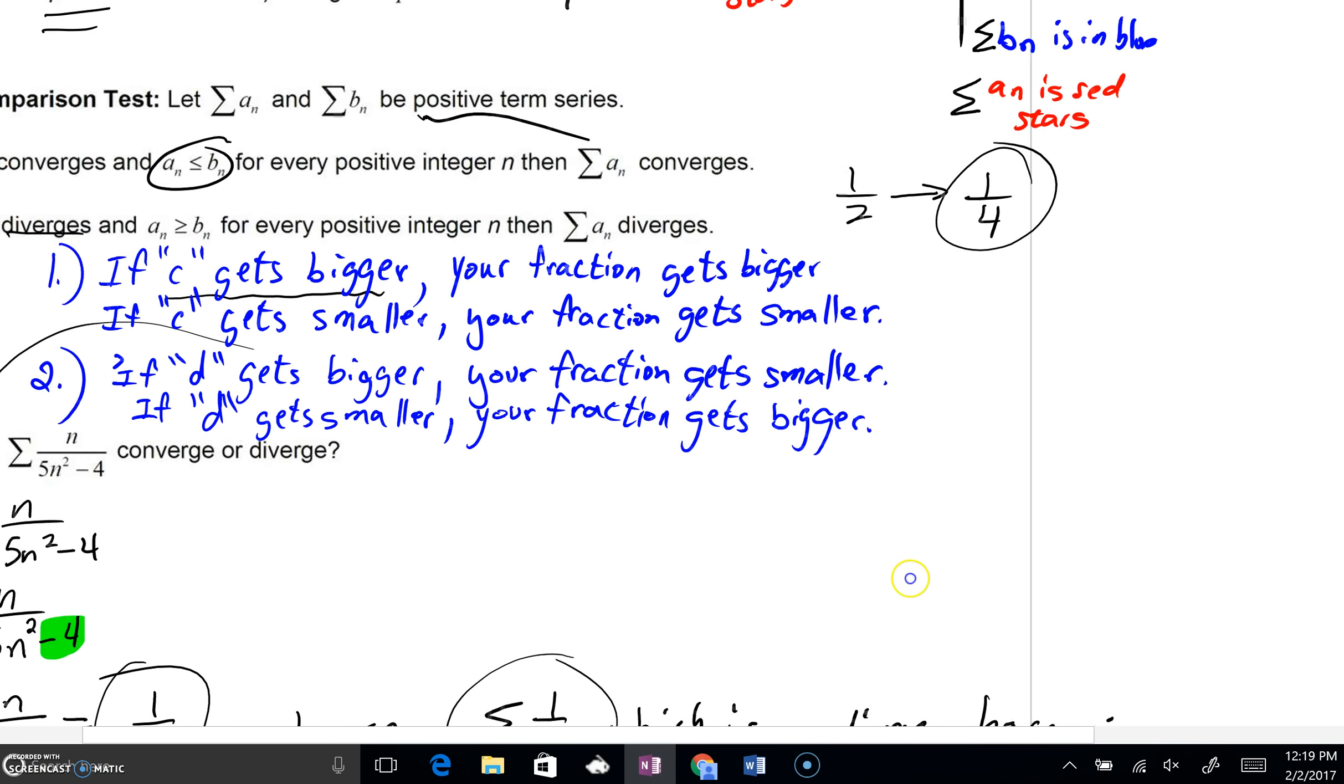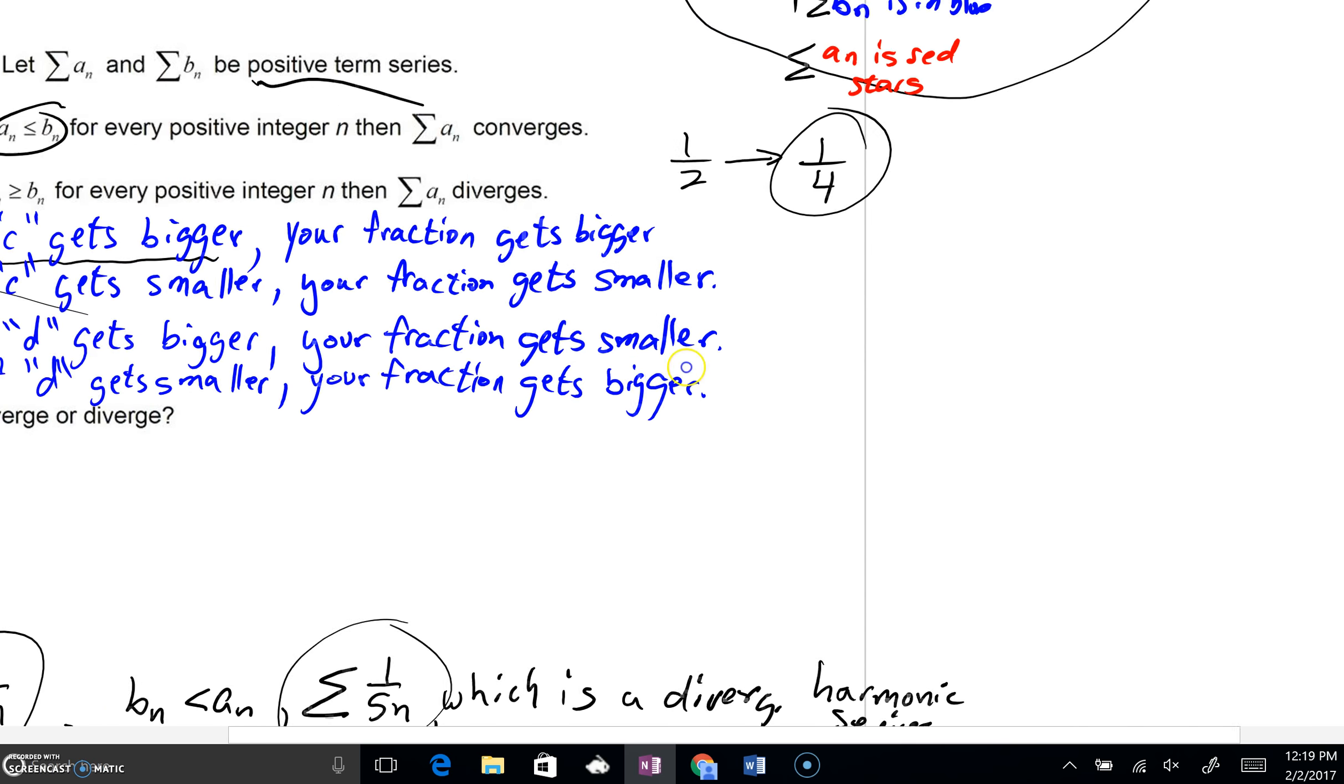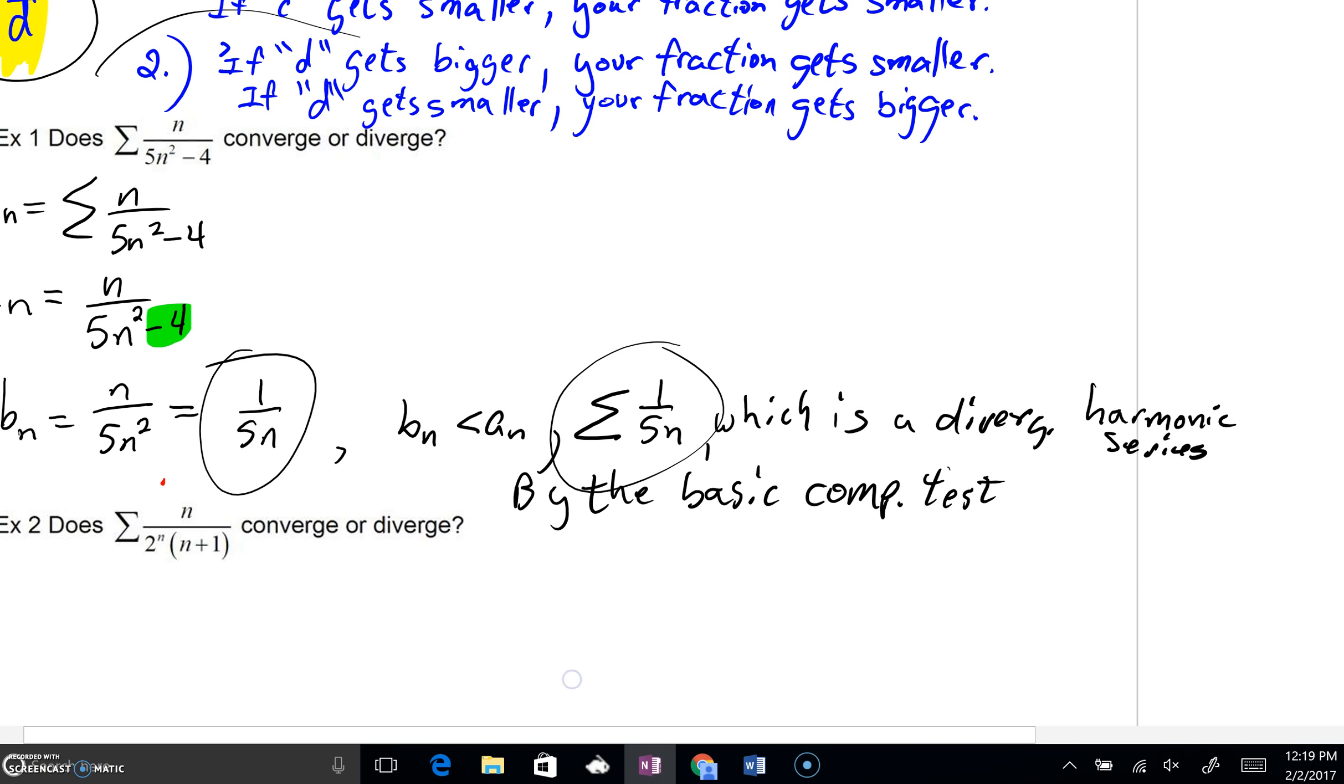What's happening is right now, we're looking at this new series b sub n. We're recognizing that we can state that it is diverging. I'm calling your attention back to that second picture, where if you know that b sub n is going to be launching off towards infinity, but a sub n is actually going to be bigger, that means we can say by the basic comparison test this original series diverges also.